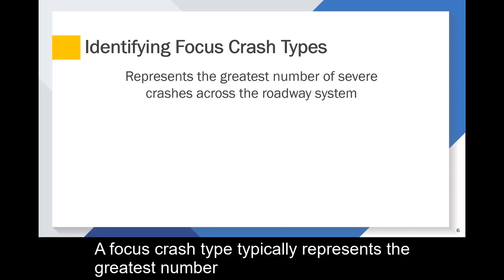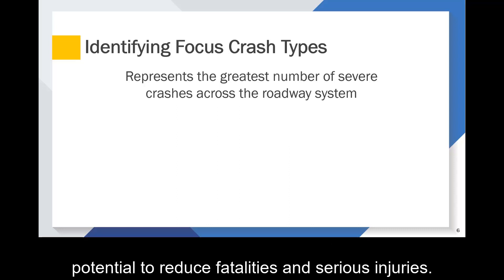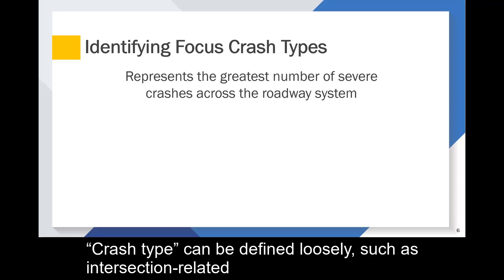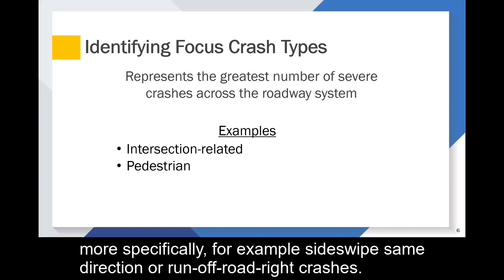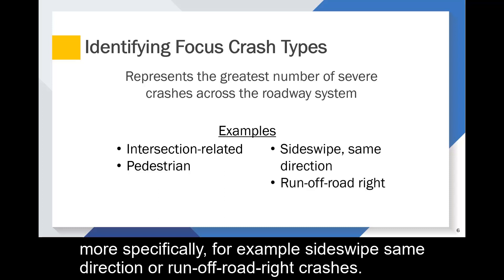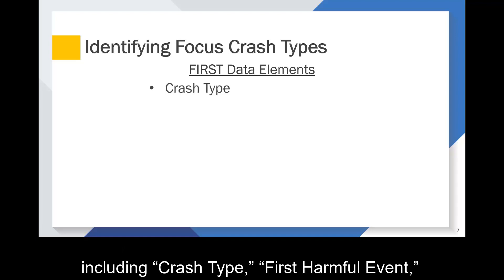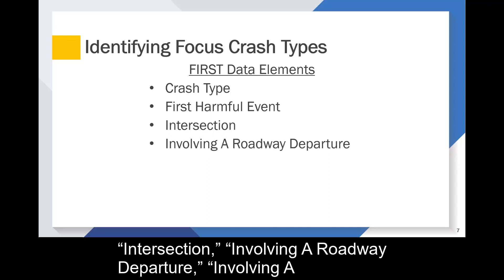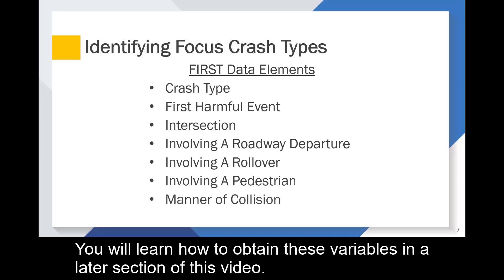A focus crash type typically represents the greatest number of severe crashes across the roadway system and provides the greatest potential to reduce fatalities and serious injuries. Crash type can be defined loosely, such as intersection-related crashes or pedestrian crashes. It can also be defined more specifically, for example, sideswipe same direction or runoff road right crashes. FIRST contains several data elements that can be helpful in identifying focus crash types, including crash type, first harmful event, intersection, involving a roadway departure, involving a rollover, involving a pedestrian, and manner of collision.